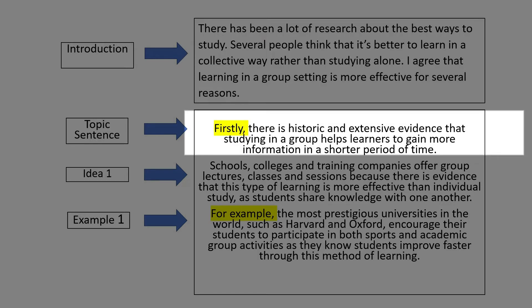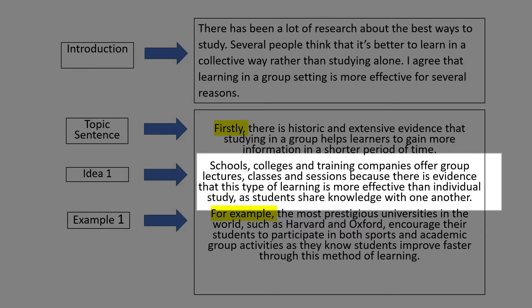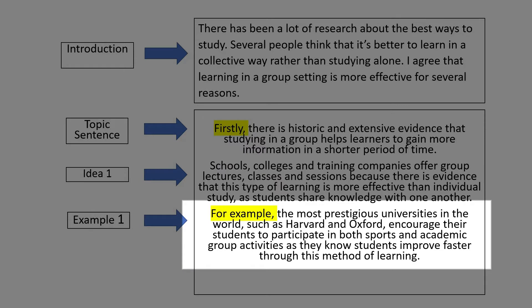Topic sentence: 'Firstly, there is historic and extensive evidence that studying in a group helps learners to gain more information in a shorter period of time.' Now developing it: 'Schools, colleges and training companies offer group lectures, classes and sessions, because there is evidence that this type of learning is more effective than individual study, as students share knowledge with one another.' Example: 'For example, the most prestigious universities in the world, such as Harvard and Oxford, encourage their students to participate in both sports and academic group activities, as they know students improve faster through this method of learning.'